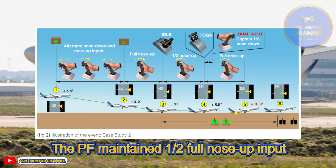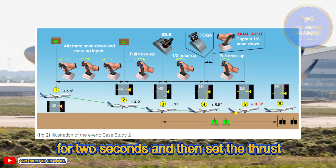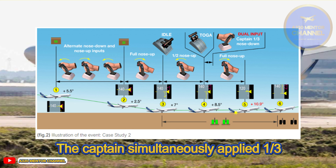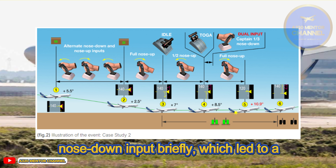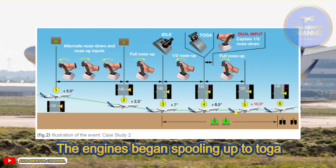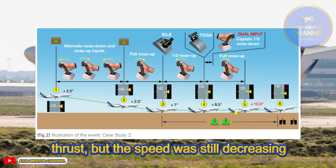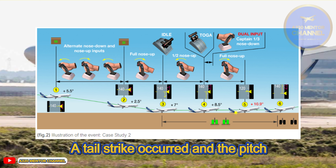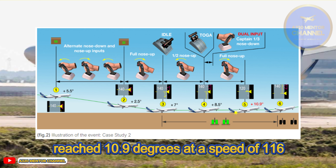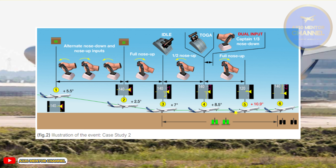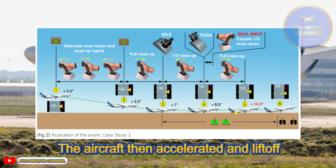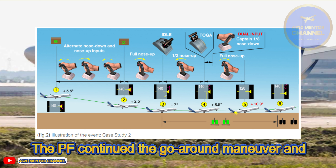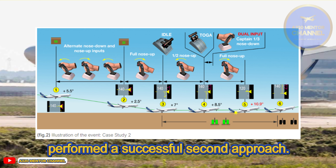The PF maintained one-half full nose-up input for two seconds and then set thrust levers to the TOGA detent combined with a full nose-up input. The captain simultaneously applied one-third nose-down input briefly, which led to a dual input call-out. The engines began spooling up to TOGA thrust, but speed was still decreasing and pitch increasing due to the full nose-up inputs. A tail strike occurred; pitch reached 10.9 degrees at a speed of 116 knots, V-app minus 23 knots. The aircraft then accelerated and liftoff was achieved at around 130 knots. The PF continued the go-around and performed a successful second approach.